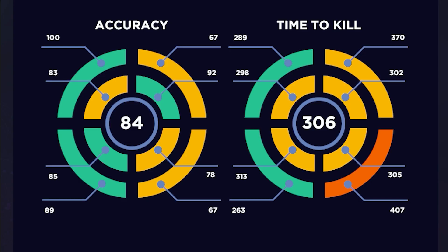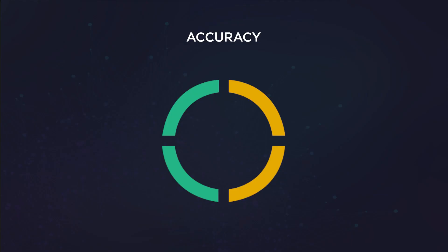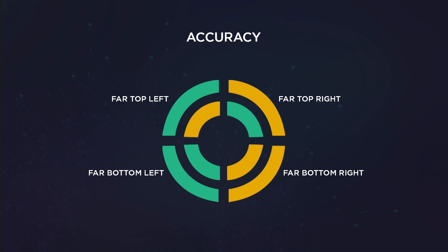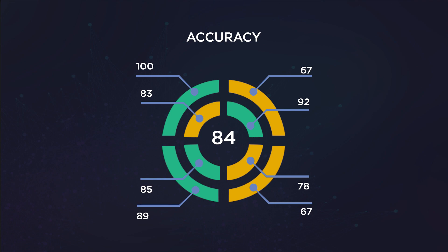The accuracy and time to kill graphs above are broken down as follows. The outer segments on each side represent targets which are further, and the inner segments represent targets which are close. The segments will change color from green, yellow, orange, and red to indicate how well you performed in that location, with green being the best performance and red being the least. The accuracy graph is measured in percentage and the time to kill is measured in milliseconds. Here we can see that my aim wasn't too spicy on the right side of the screen, which was also backed up in the insights.